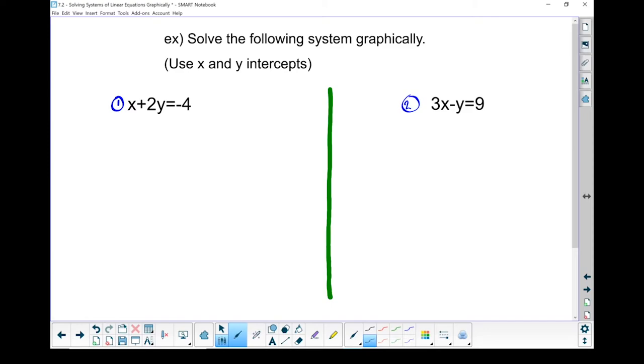Let's start with the first one. Equation number 1, the x-intercept. To find the x-intercept of this equation, let's set y to equal 0. I'm going to rewrite the equation, and anywhere where there's a y, I'm going to put a 0 in. 2 times 0 gives me 0. x equals minus 4. What that means is it crosses the x-axis at minus 4. The coordinate of that point is going to be negative 4 and 0.